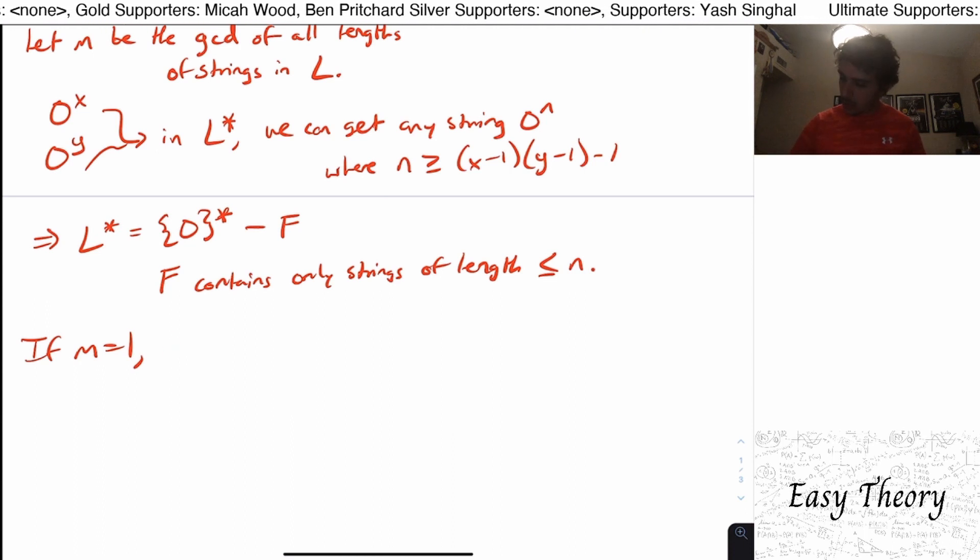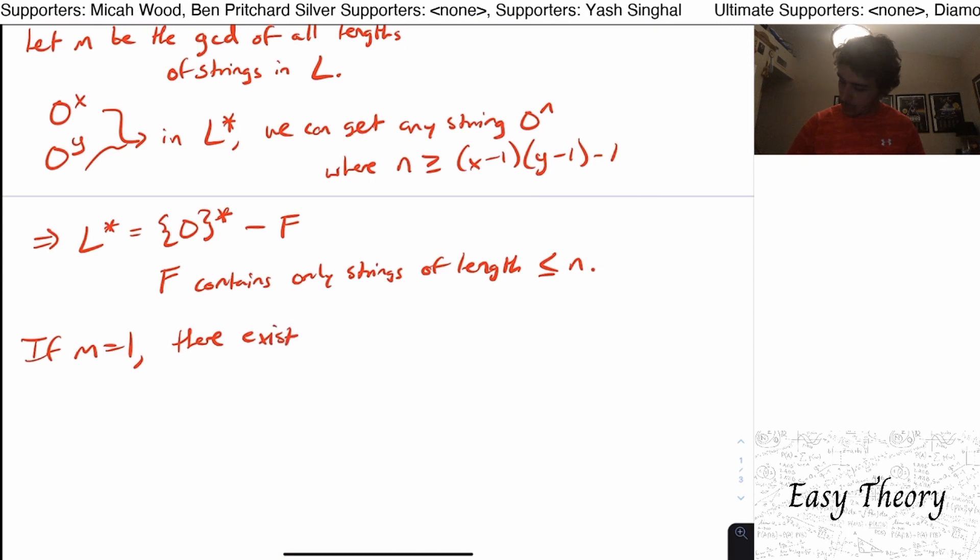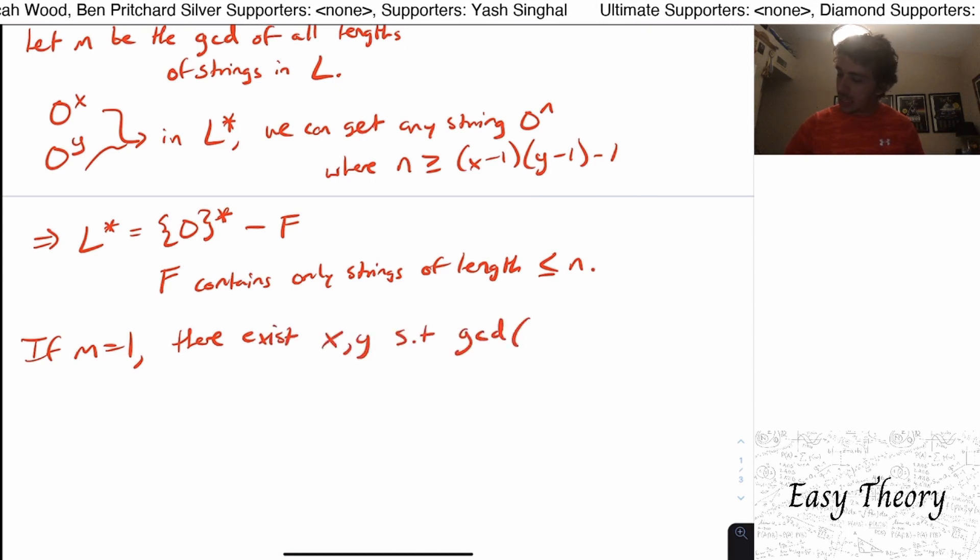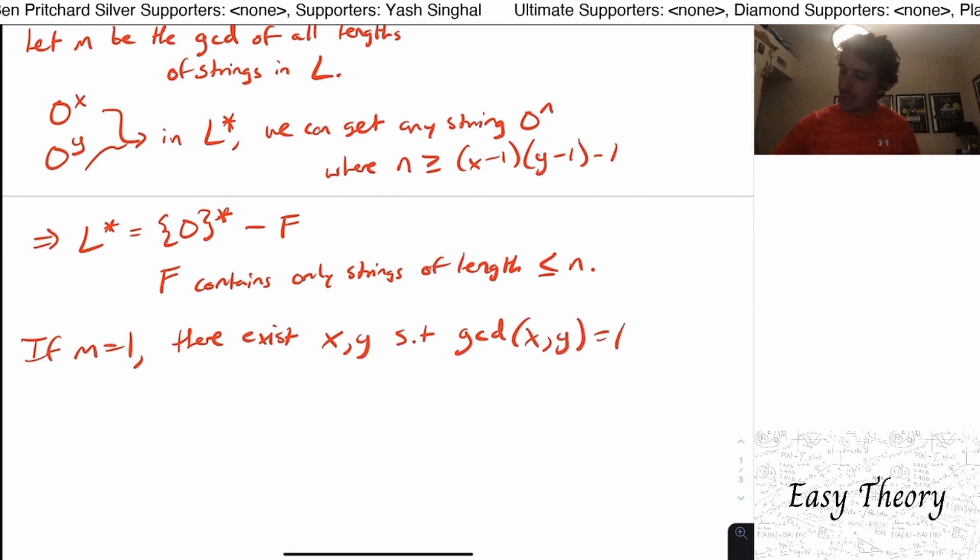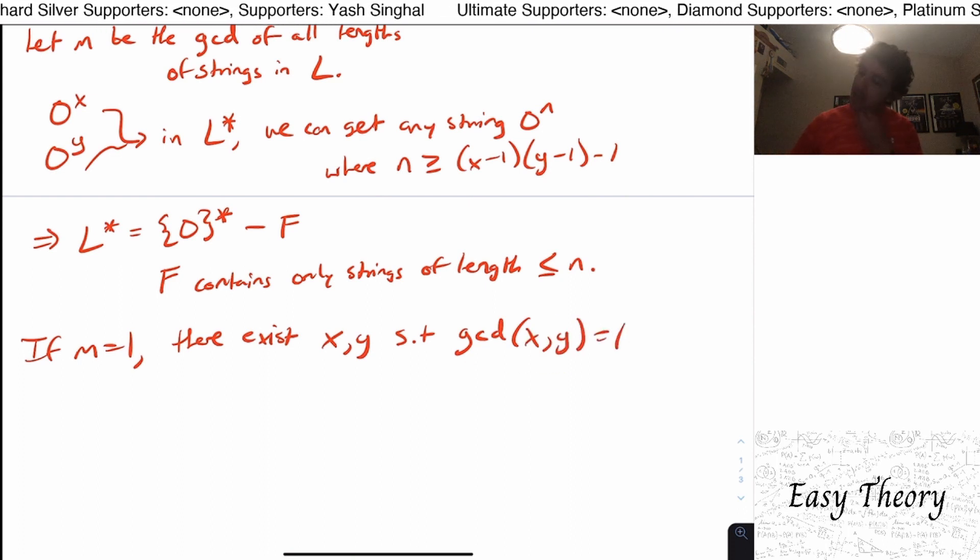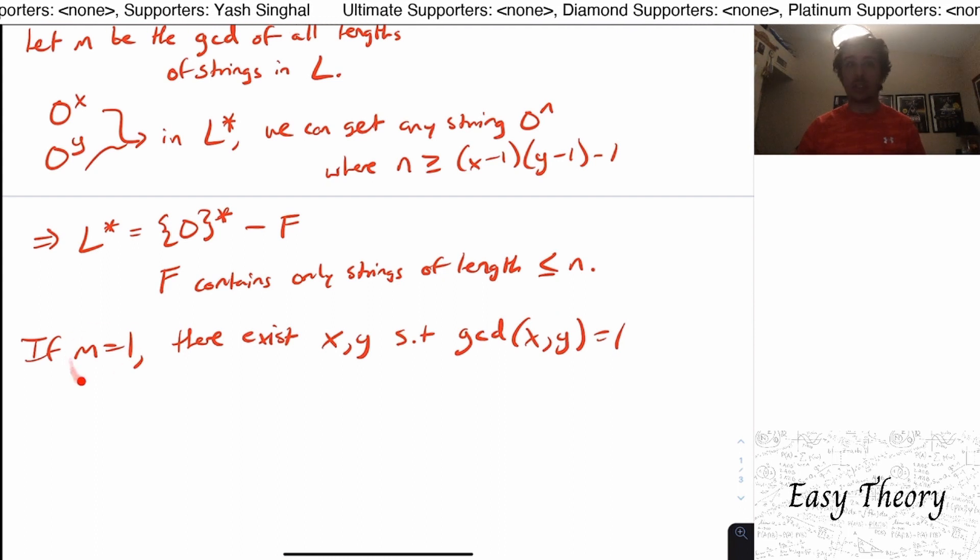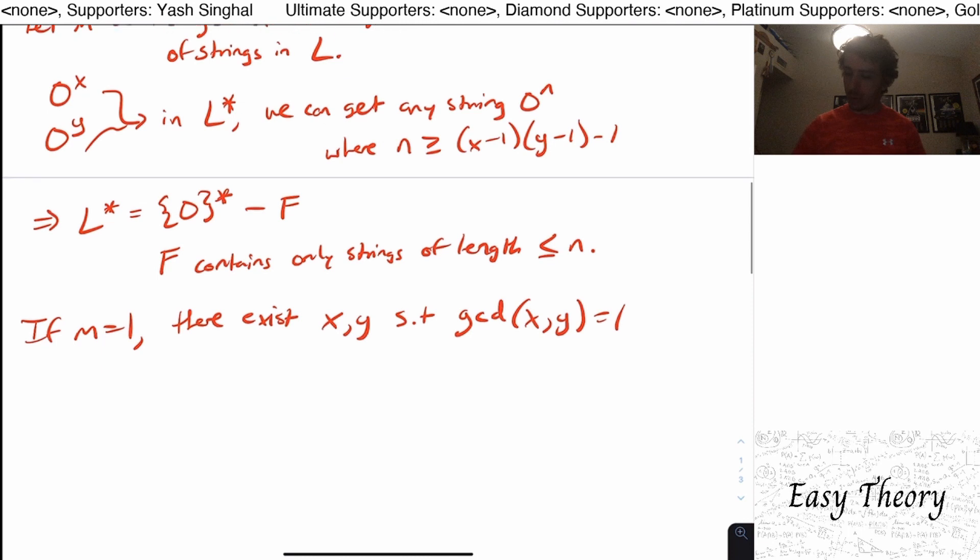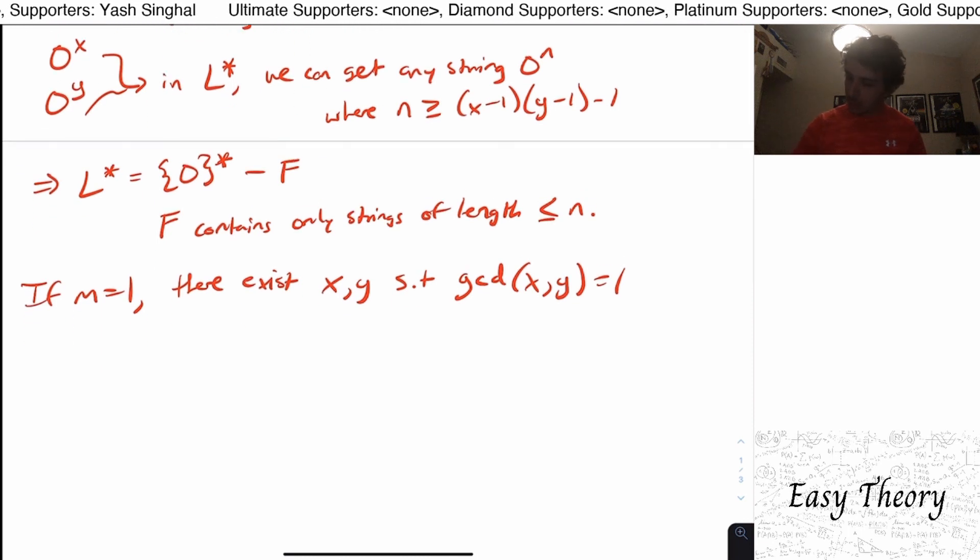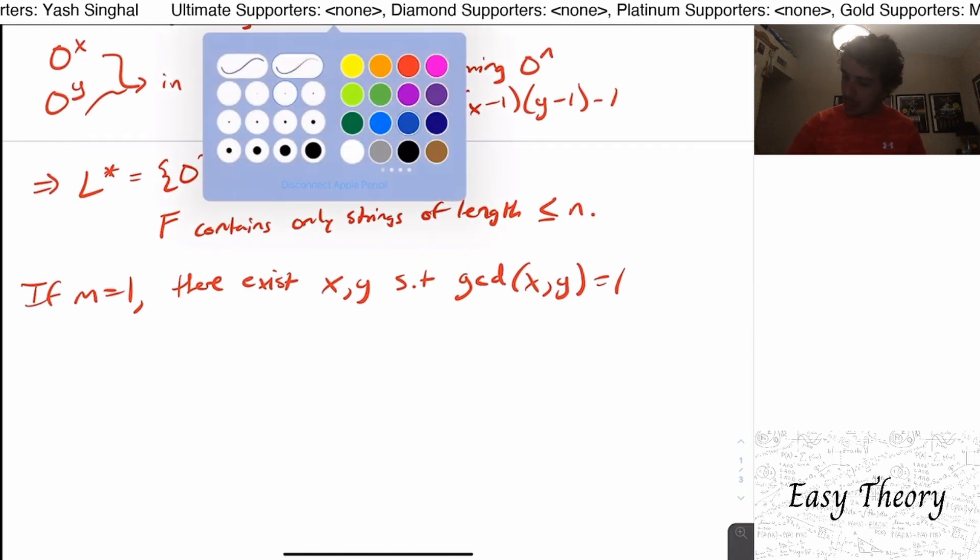So there exists x and y such that the GCD of x and y is one. Because if this wasn't the case, then that means that the greatest common divisor is not one is some higher number. Well then, so then we can repeat the above argument.